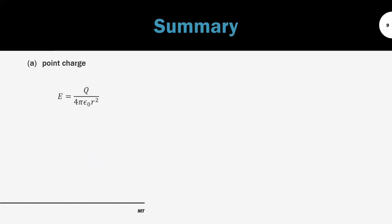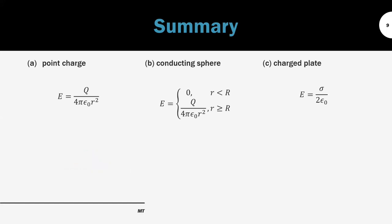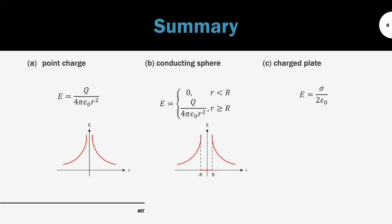In summary, we have learned the Gauss law and how to use it to derive the formula of E for the point charge, conducting sphere, and charged plate. For the point charge, the electric field strength is inversely proportional to the square of r. The conducting sphere has almost the same relation as the point charge, except it has zero electric field strength inside the sphere. For the charged plate, the electric field strength is uniform and independent of distance.